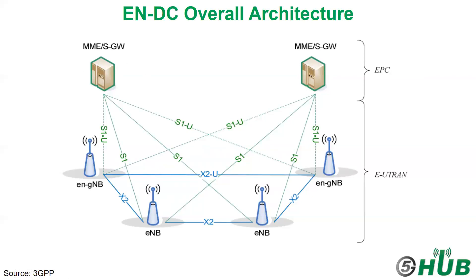LTE eNodeB and NR gNodeB use their own physical and MAC layers with independent MAC schedulers. In EN-DC, in case of the data plane, both the master node (LTE) and the secondary node (gNodeB) have a direct interface with the LTE core network serving gateway — as you can see here with S1 user plane for the eNodeB and S1 user plane for the gNodeB. But in case of the control plane, only the master node LTE eNodeB connects to the LTE core network.